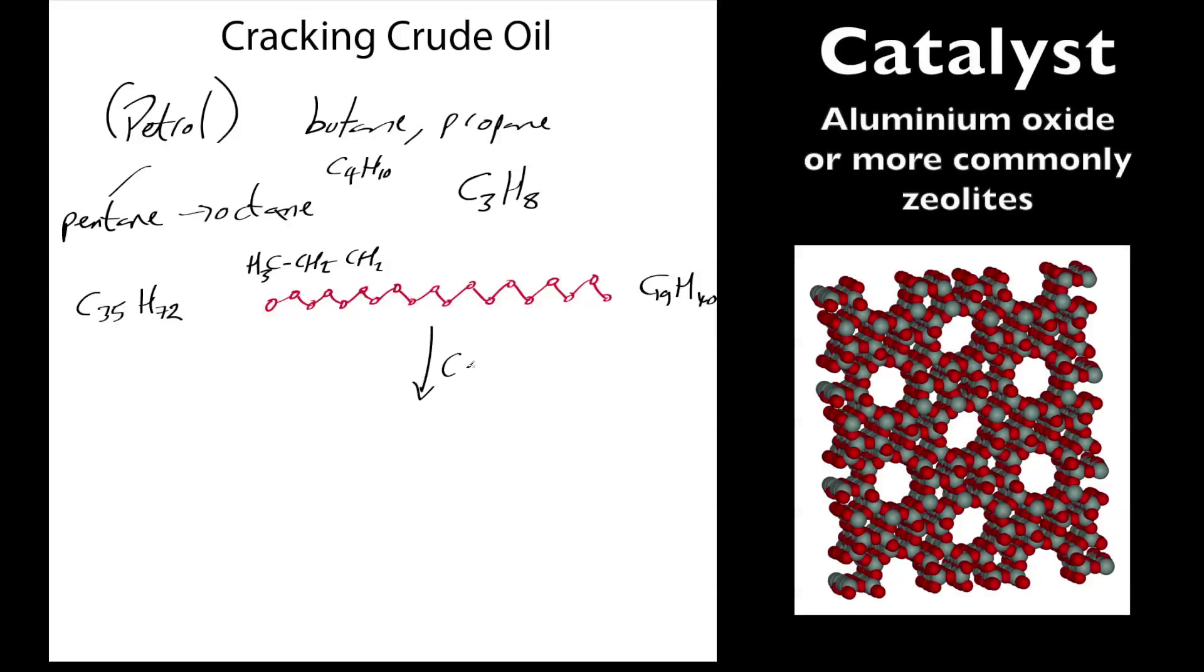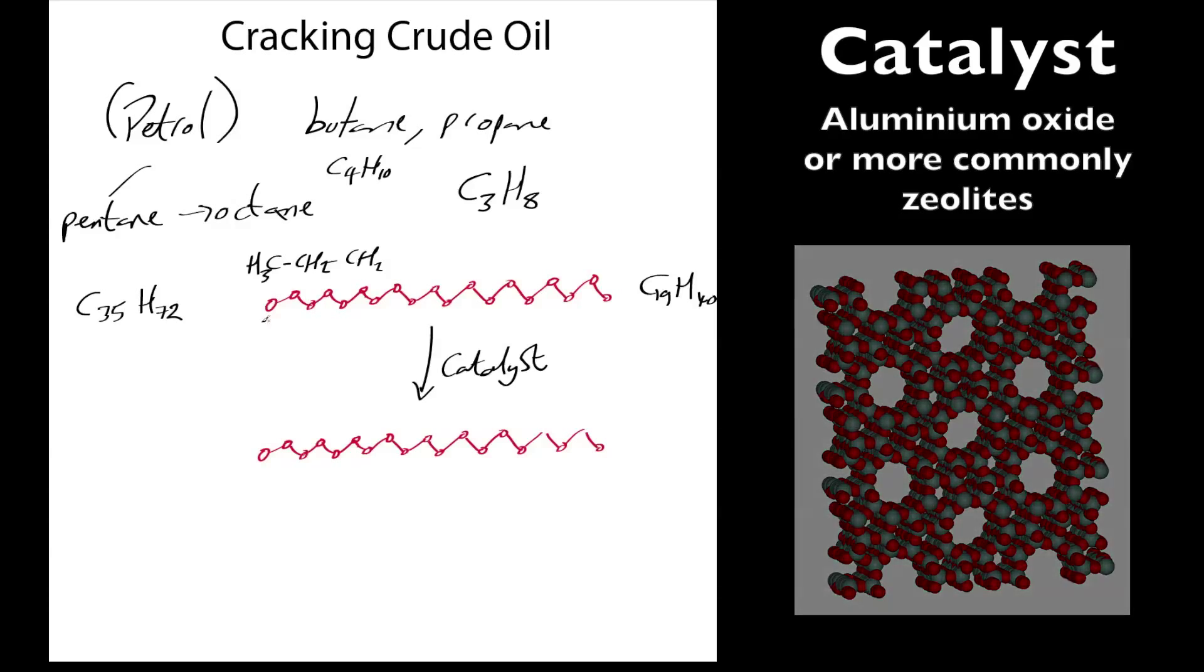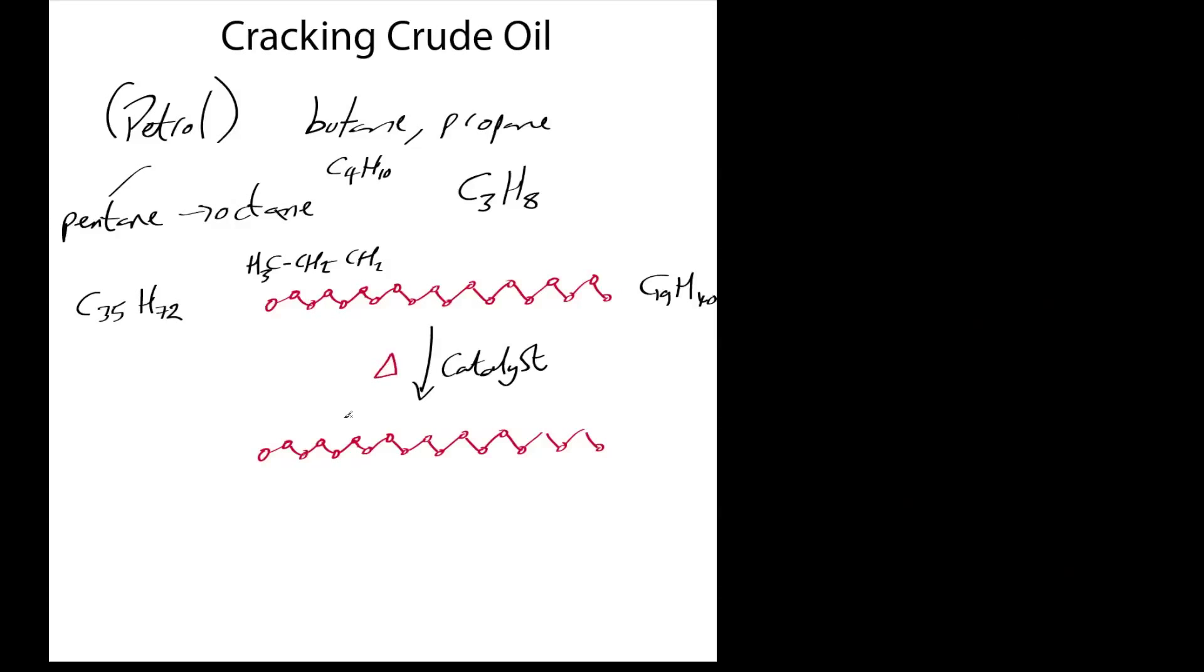It puts it over a catalyst and breaks it apart thermally—it uses heat. I'll introduce the symbol delta for heat, which I've come across through my studies at university and school, but T for temperature is just as good. Heat is needed there. I'll just clean this up a bit.